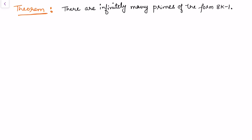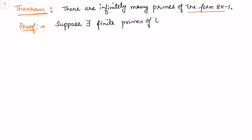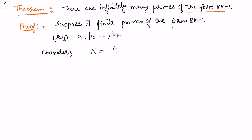The second result we wish to prove is that there are infinitely many primes of the form 8k-1. The technique is the same: we assume the contrary. Suppose there exist only finitely many primes of the form 8k-1. Call these primes p₁, p₂, ..., pₙ.